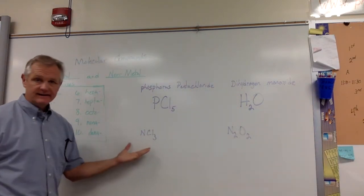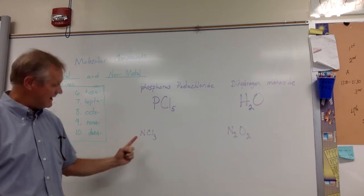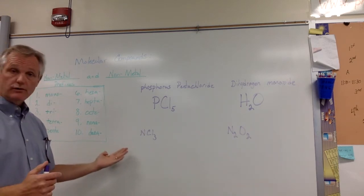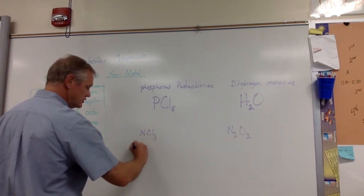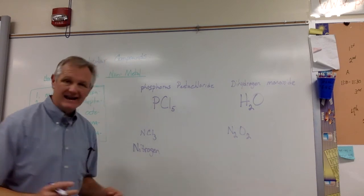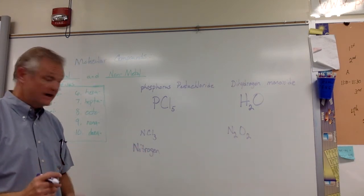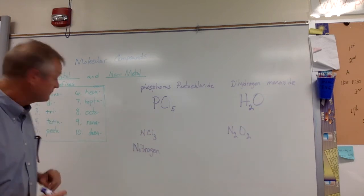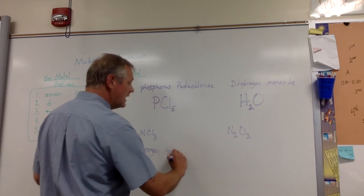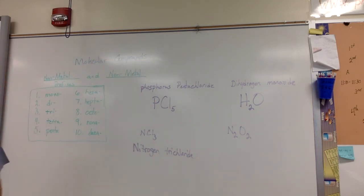In the next examples, we're going to write the name of a molecular compound given the chemical formula. I have NCl3. Nitrogen is only one, but since it's the first element written, I don't write mono — I just write nitrogen. My second element is chlorine; since it's the second element, I drop the '-ine' and add '-ide,' making it chloride. The number is three, so the prefix is tri. This gives us nitrogen trichloride.